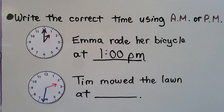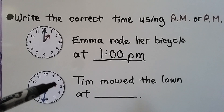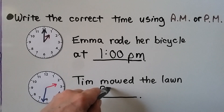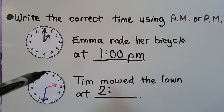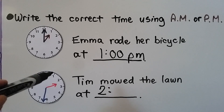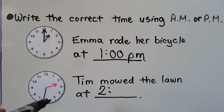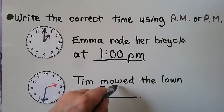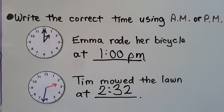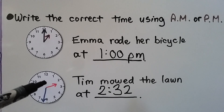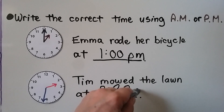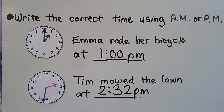It says Tim mowed the lawn at — the hour hand is between the two and three, so it's still two, and the minute hand: we skip count by fives — 5, 10, 15, 20, 25, 30 — then count on by ones: 31, 32. So it's 2:32. But is it A.M. or P.M.? Would Tim mow the lawn at 2:32 in the morning? No, that would be too early — he'd probably still be sleeping. So this must be 2:32 P.M.